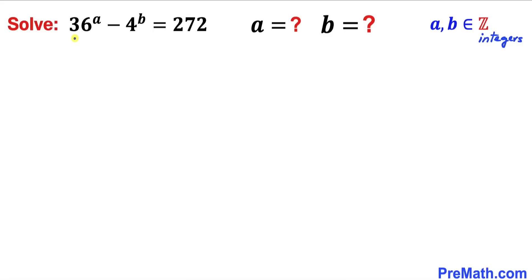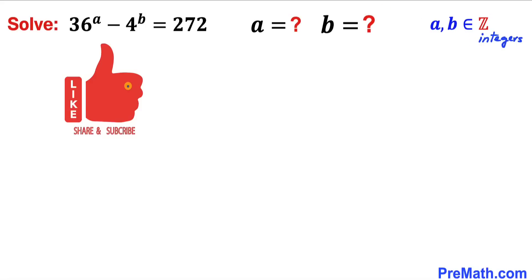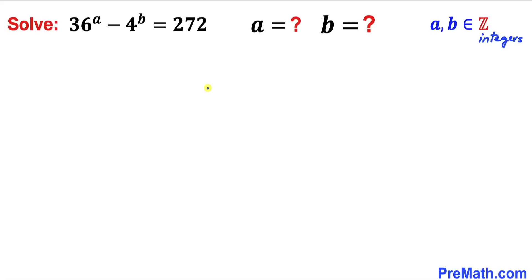Welcome to pre-math. In this video we are going to solve the equation 36^a minus 4^b equals 272. In other words, we are going to find the value of a and the value of b, where a and b are integers. Please don't forget to give a thumbs up and subscribe.